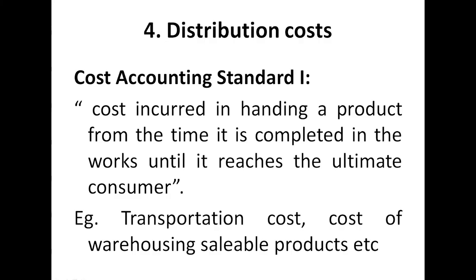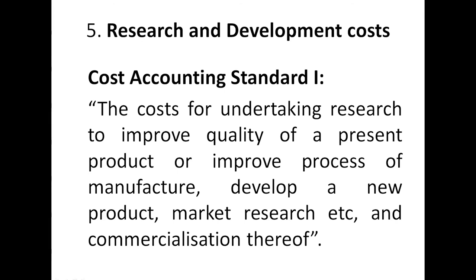Fourth one: distribution cost. After producing a product, until demand arises, there is a need to store the products, and once demand arises, it has to be sold to customers. Whatever cost is incurred in between comes under distribution cost. As per the definition, it is the cost incurred in handling a product from the time it is completed in the works until it reaches the ultimate consumer — including transportation cost, cost of warehousing, cost of delivery van, depreciation, and maintenance.